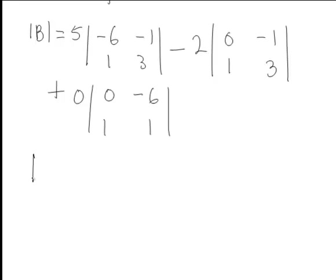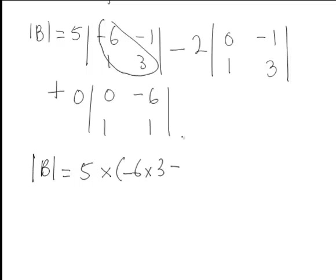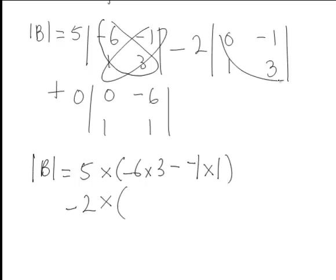Therefore, working out these sub-determinants, it will be 5 multiplied by — in this case, negative 6 times 3 minus negative 1 times 1. Then for the next one, it will be minus 2 times that sub-determinant.